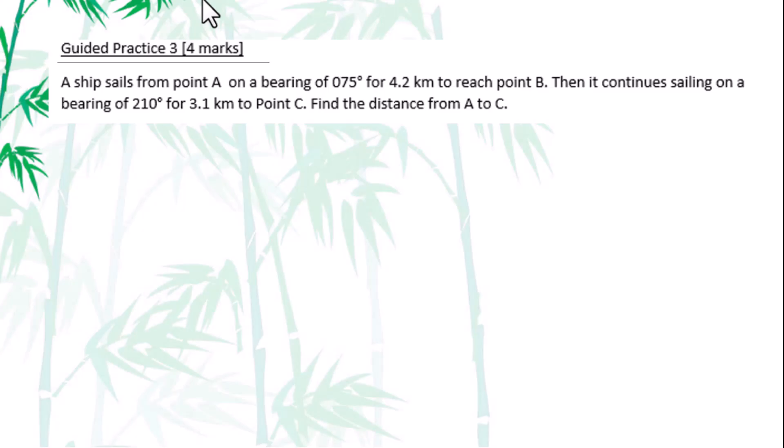Let's go to guided practice 3. A ship sails from point A on a bearing of 75º for 4.2km to reach point B. Then it continues sailing on a bearing of 210º for 3.1km to point C. Find the distance from A to C.